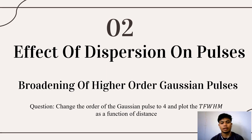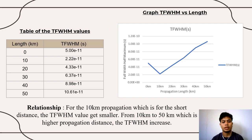My name is Hafiz Waburi bin Muhammad Mazzouki, and I will present on the broadening of higher-order Gaussian pulses. The order of the Gaussian pulses is changed to 4, and the TFWHM is plotted as a function of distance. After changing to 4th order, for short distances such as 10 km, the TFWHM value gets smaller. However, from 10 km to 50 km, at higher propagation distances, the TFWHM value increases up to 10.61 × 10⁻¹¹.